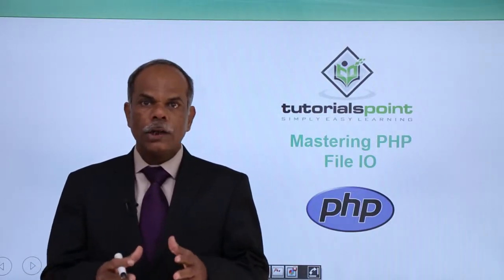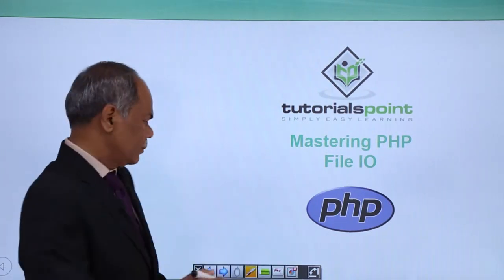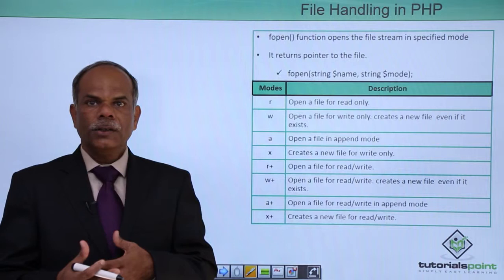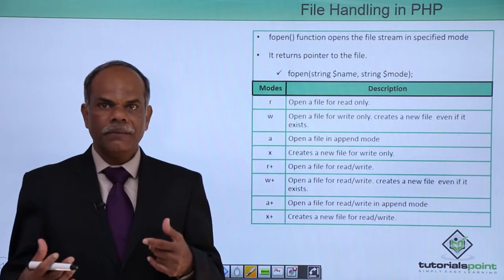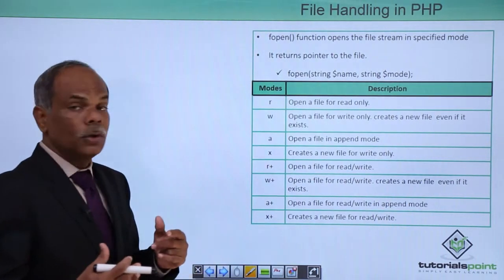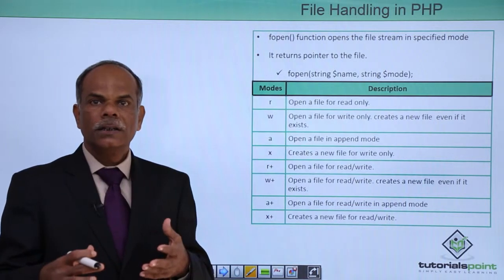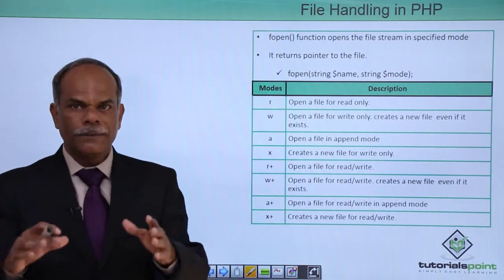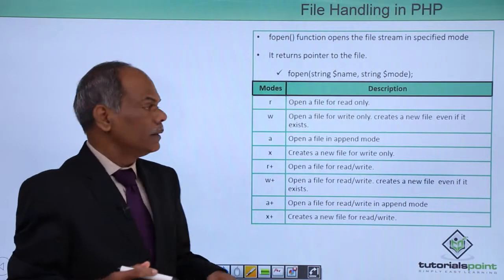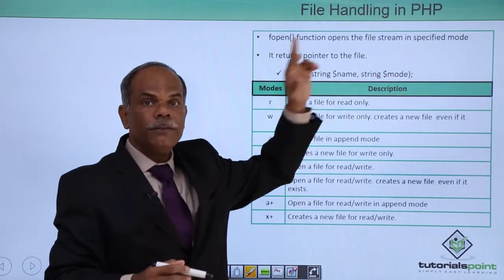Hello friends. In this video I will tell you about the file input output operations and how they are done in PHP language. Instead of the standard input and output streams, you can read the data from a file stream and you can store the data into a file by redirecting the data towards a file stream. In order to use the file as either the source of data for reading or the destination of data to store, you have to open the file. In order to open a file, PHP has an inbuilt function called fopen, and the format is fopen with the file name that you want to open and the mode in which you want to open.